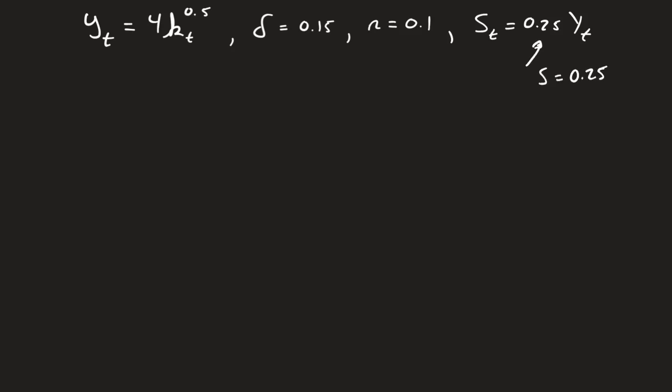Now, the first step we want to do is we know that we are trying to solve. We have s times y_t is going to equal n plus delta times k_t, so we're saying that my overall savings is equal to my investment.